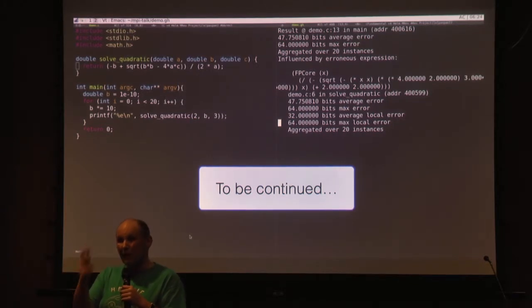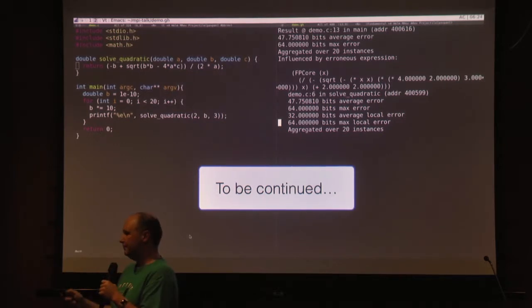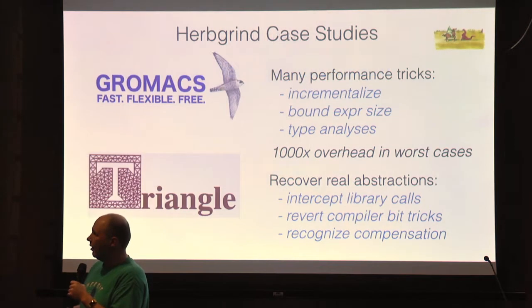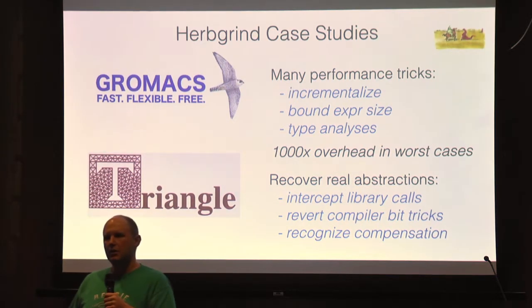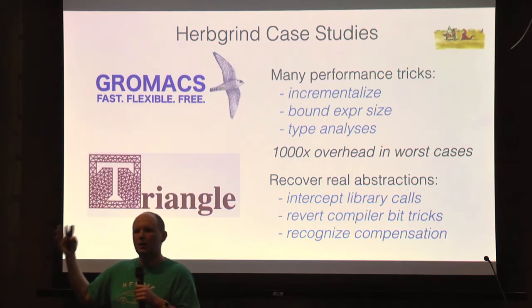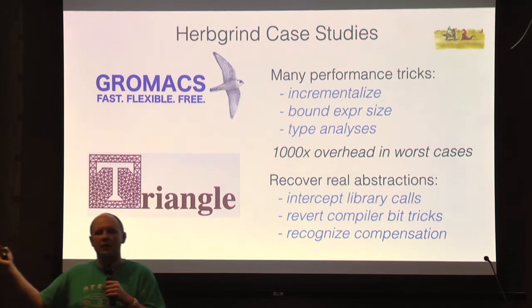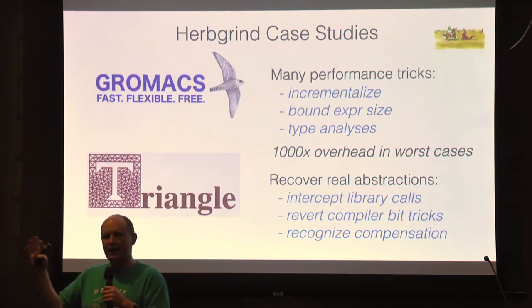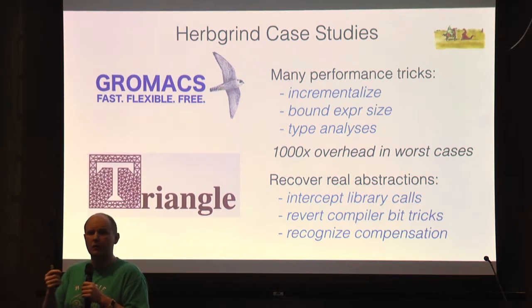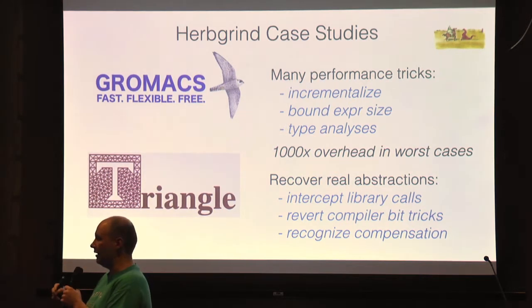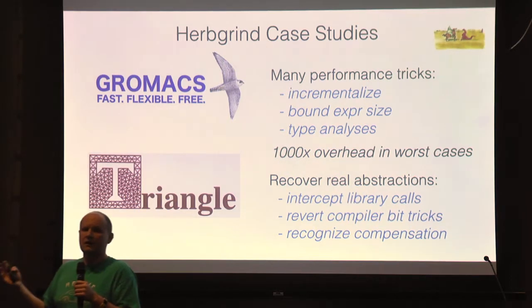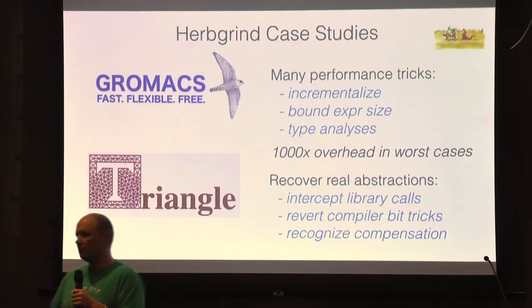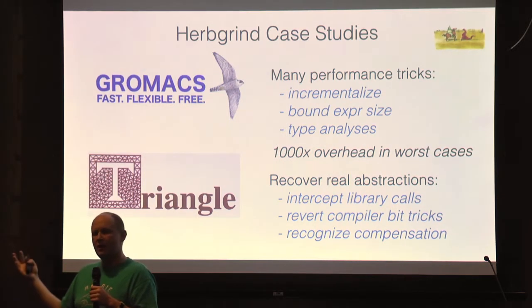All we've done with Herbgrind is tell the user where in their application they need to look — how much error they have in their output and what part of their program was responsible. We did it by keeping information about every single instruction executed. We implemented this building on Valgrind, that's why it's called Herbgrind, and did a bunch of tricks to make this work in practice. Where you really want a tool like Herbgrind is not on a 10-line version of quadratic, but in a tool like GROMACS, which does chemical dynamics used in drug discovery — 40,000 lines of code.